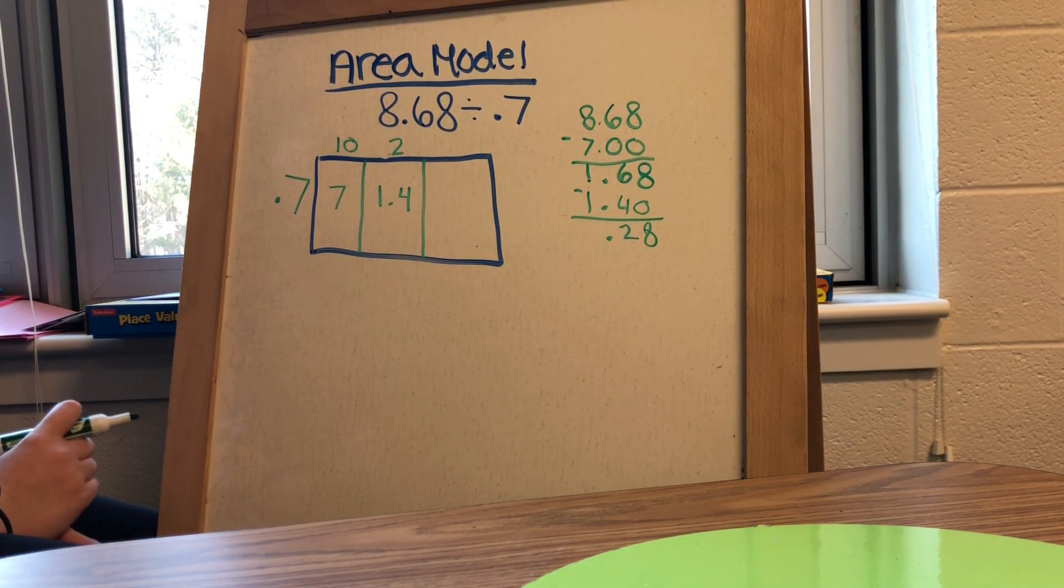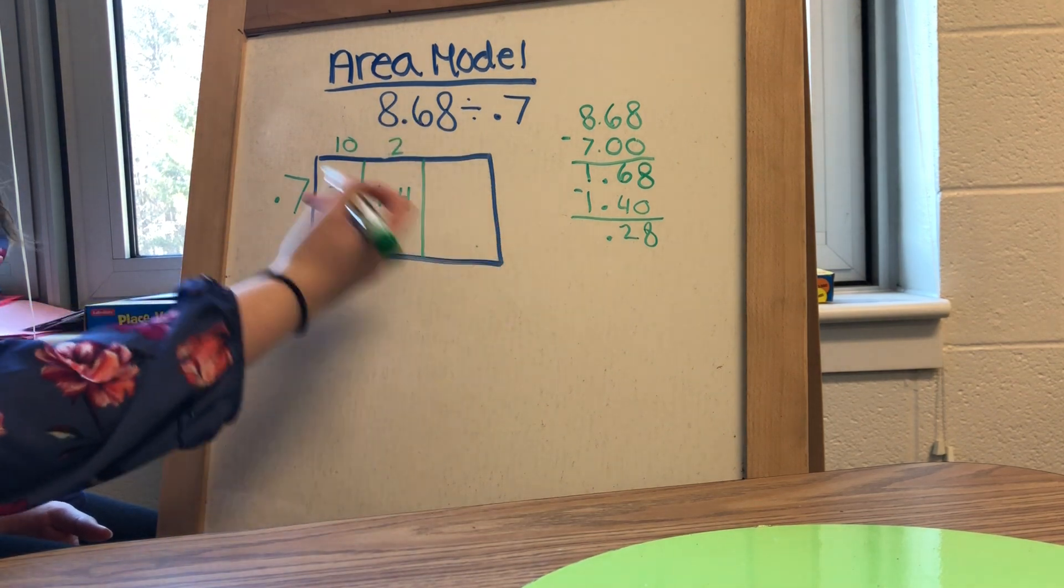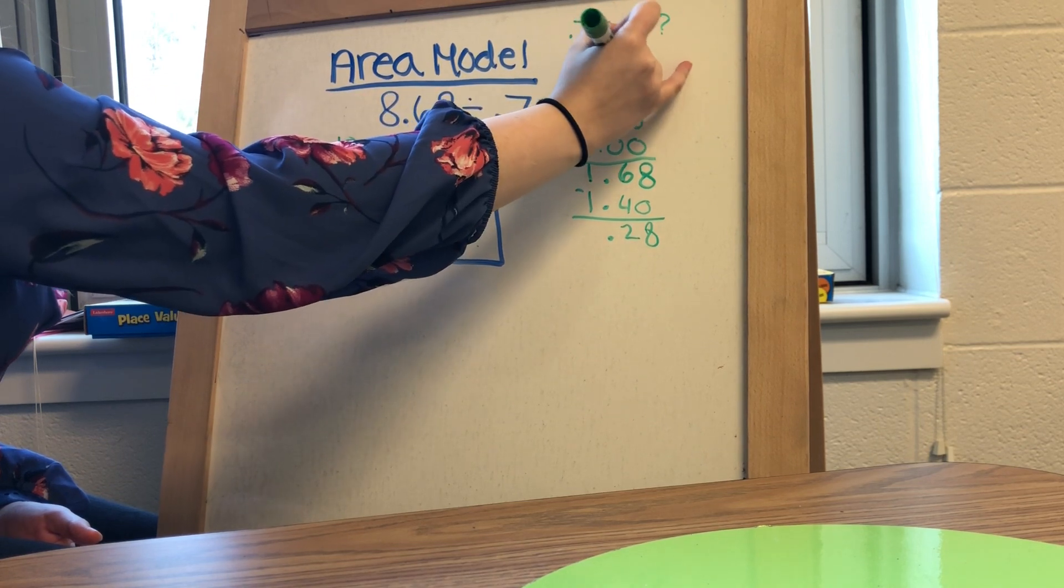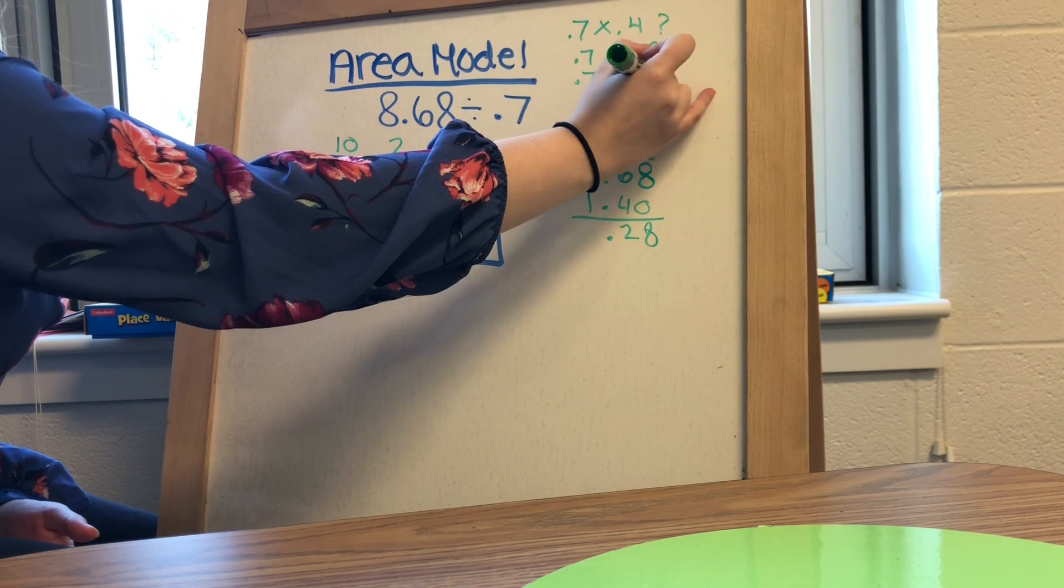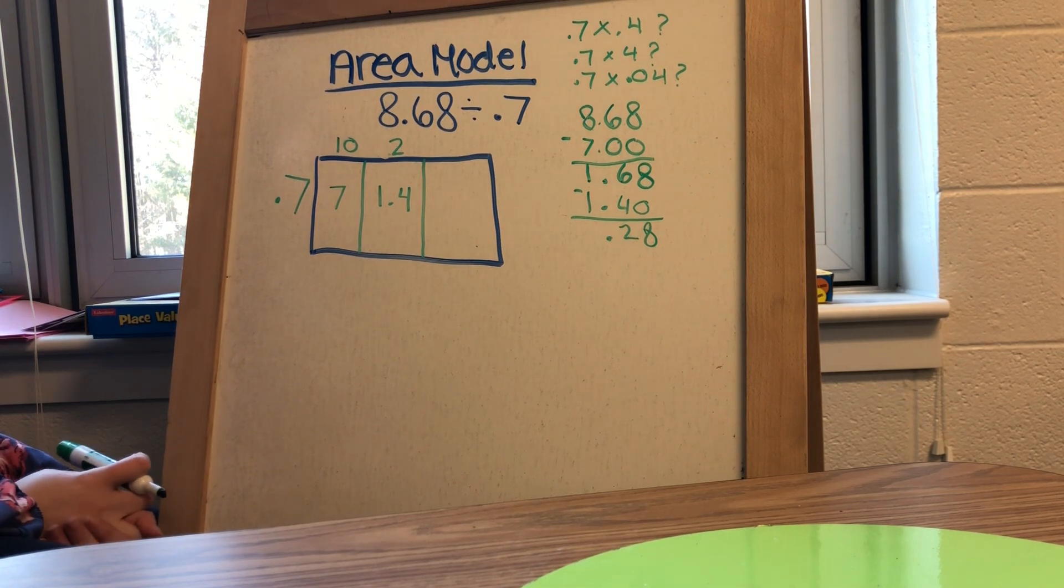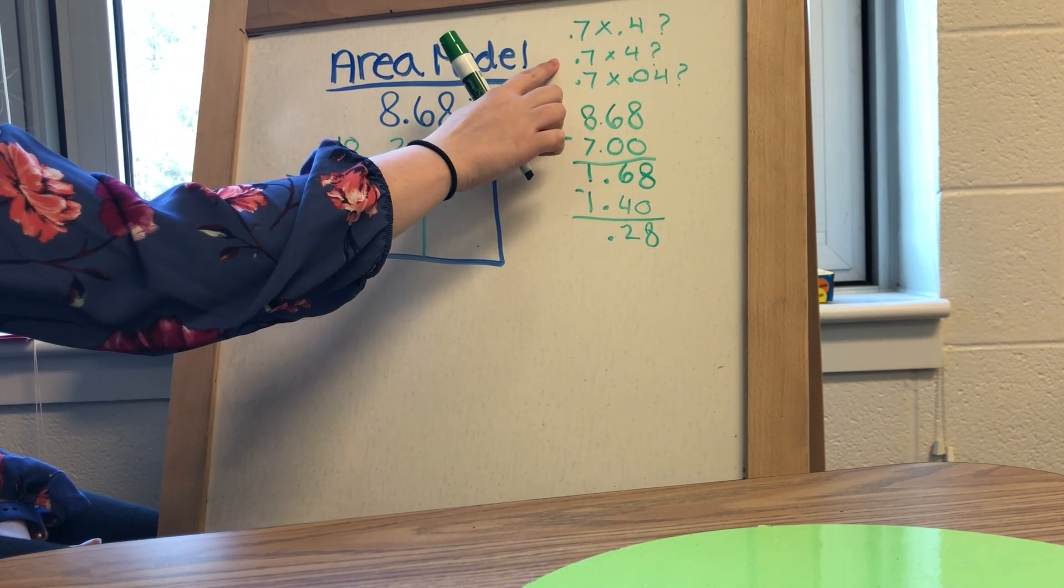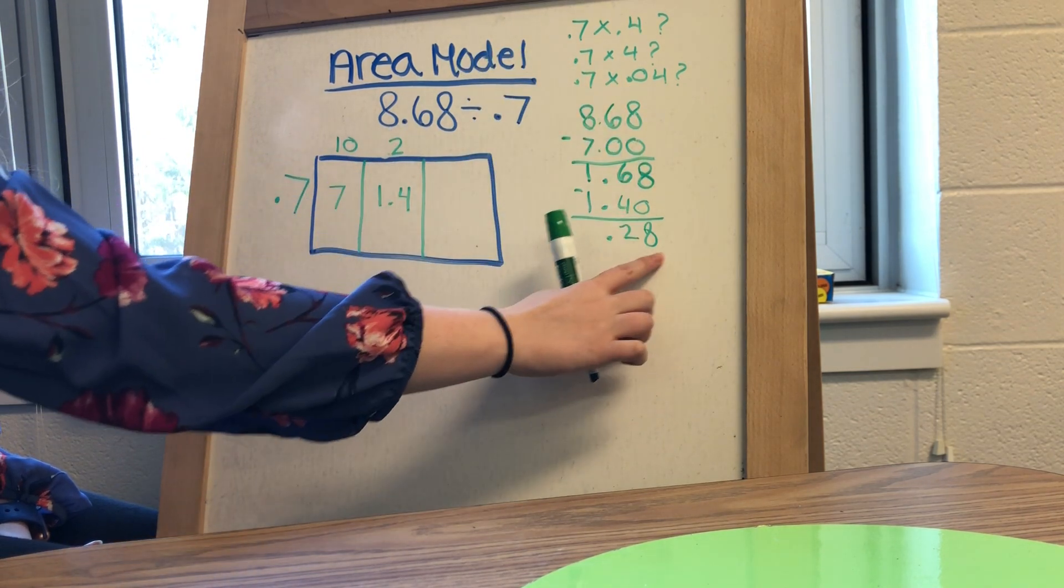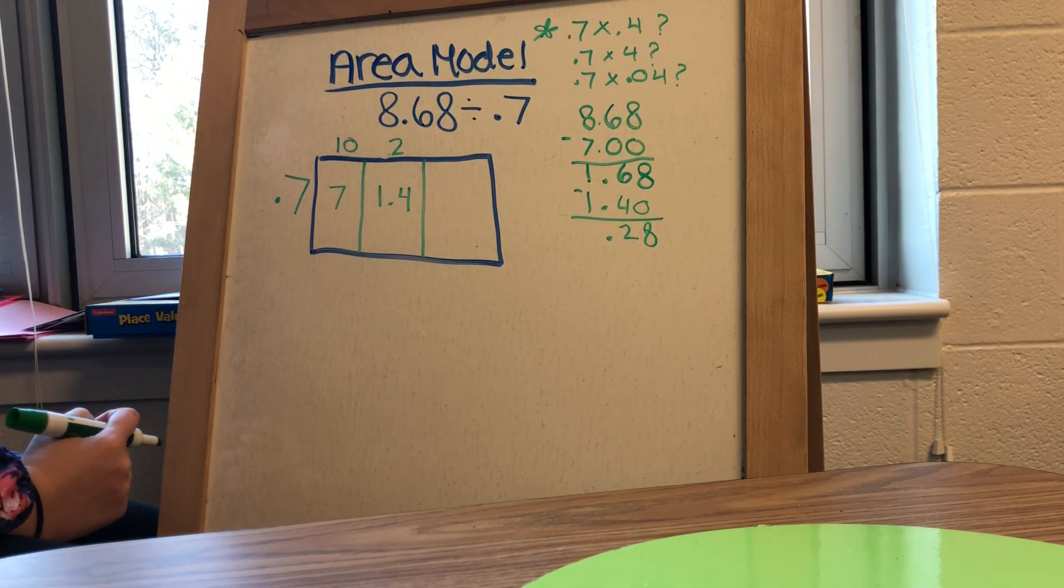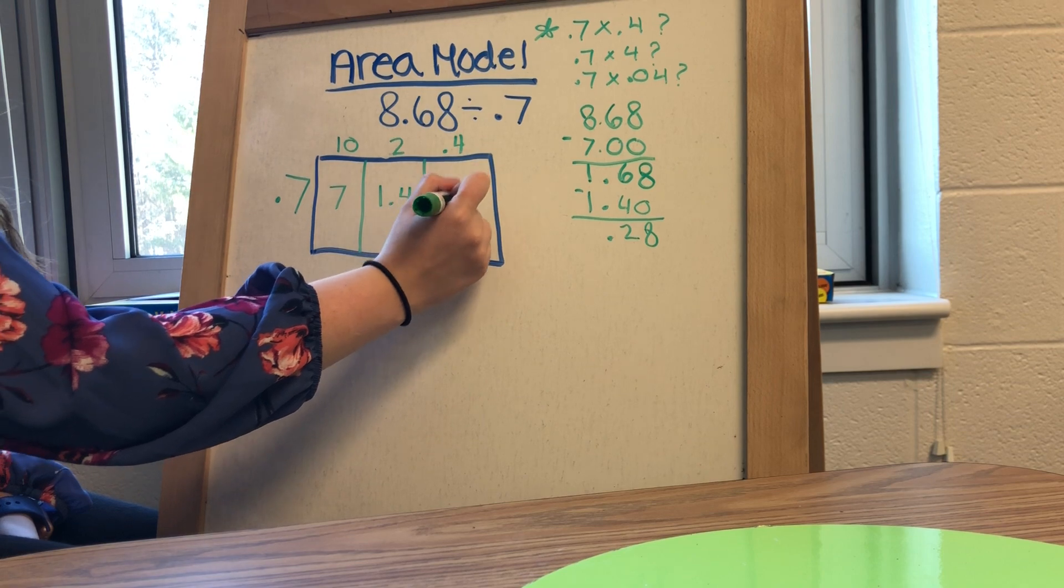Then you should be able to recognize that 7 times 4 is 28. So I need to decide, is it going to be 7 tenths times 4 tenths, is it going to be 7 tenths times 4 hundredths, or is it going to be 7 tenths times 4 thousandths. You should then be able to recognize that in the first one, I would have 2 decimal spaces, which is what I'm looking for. The second one would only have 1, and the third option would have 3. So because I only have 2 decimal spaces here, the first one, 7 tenths times 4 tenths, is going to be the one that works. So I'm going to put 4 tenths up top. 7 tenths times 4 tenths is 28 hundredths.